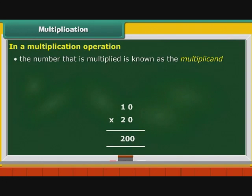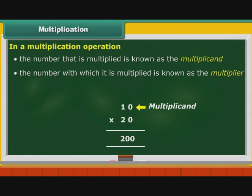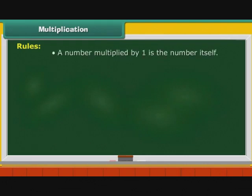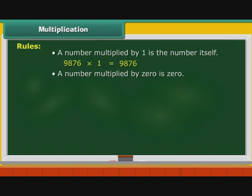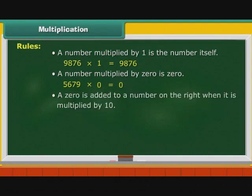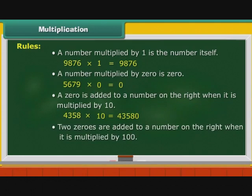The number that is multiplied is known as the multiplicand. The number with which it is multiplied is known as the multiplier, and the result is known as the product. Rules of multiplication: a number multiplied by 1 is the number itself — for example, 9876 multiplied by 1 is 9876. A number multiplied by 0 is 0. A 0 is added to the right when multiplied by 10, and 2 zeros are added when multiplied by 100.